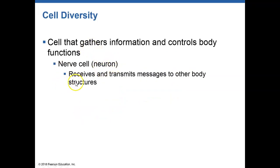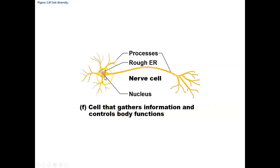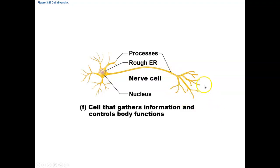We have nerve cells. Nerve cells take in and receive information, determine how to process that information, and then send the response out through the body. You have dendrites, which take in the information; then the cell body where processing occurs; and then the axon that leads to axon terminals, which sends out a response to neighboring cells.